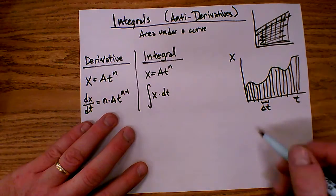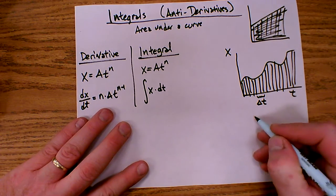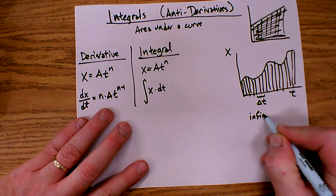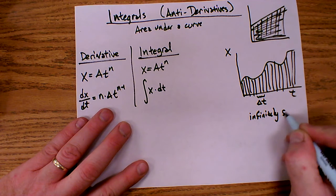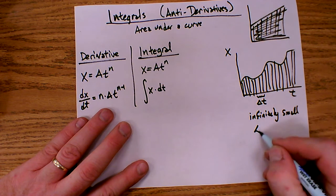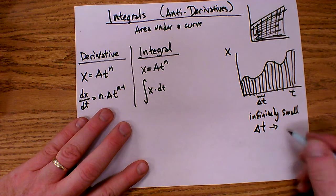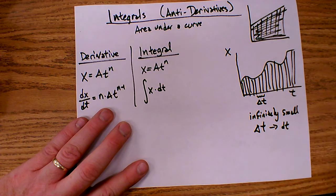And so when we get to the infinitely small, delta t becomes the derivative d, dt.